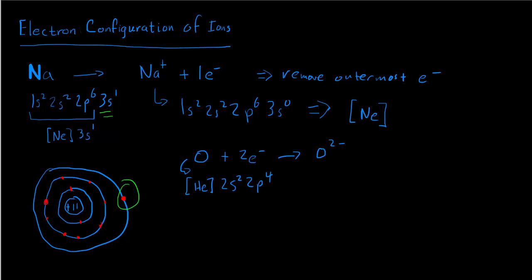So now we're adding two electrons. Where are those two electrons going to go? They're going to go in the outermost shell. When we're adding electrons, we add them to the outermost shell. So that's going to give us an electron configuration for oxide: the same as helium, then 2s2, and then 2p — we had four, and now we've added two electrons to it, giving us 2p6. This electron configuration is now the same as the electron configuration of neon.